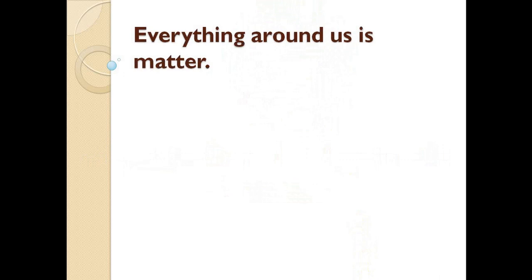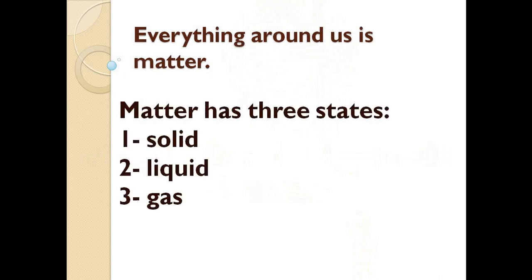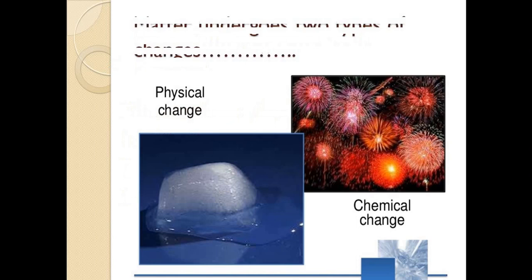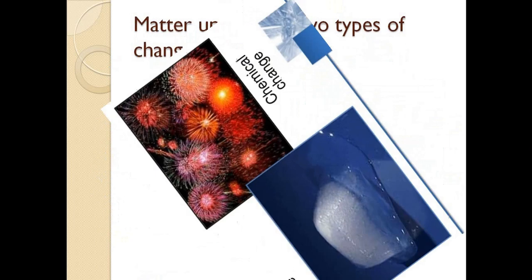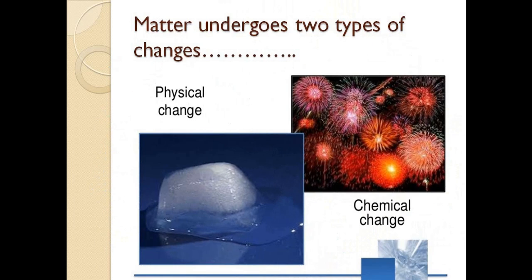As we studied before, everything around us is matter. And matter has three states, which are solid, liquid, or gas. All these states undergo two types of changes, which are physical and chemical changes.